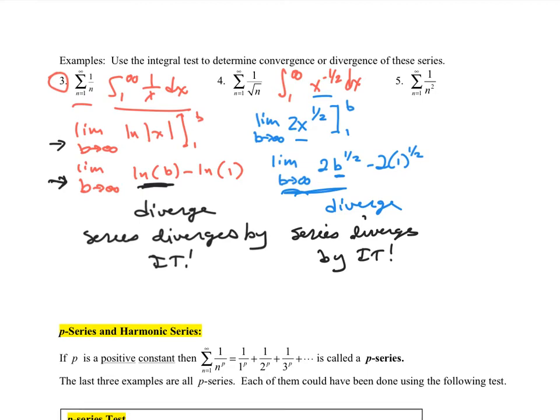Try the last one. These are all setting up pretty similar in nature. Notice it is positive, decreasing, and continuous when you put it in function form. The antiderivative of x to the negative 2 is negative 1 over x. Plug in b, plug in 1. We get this limit.